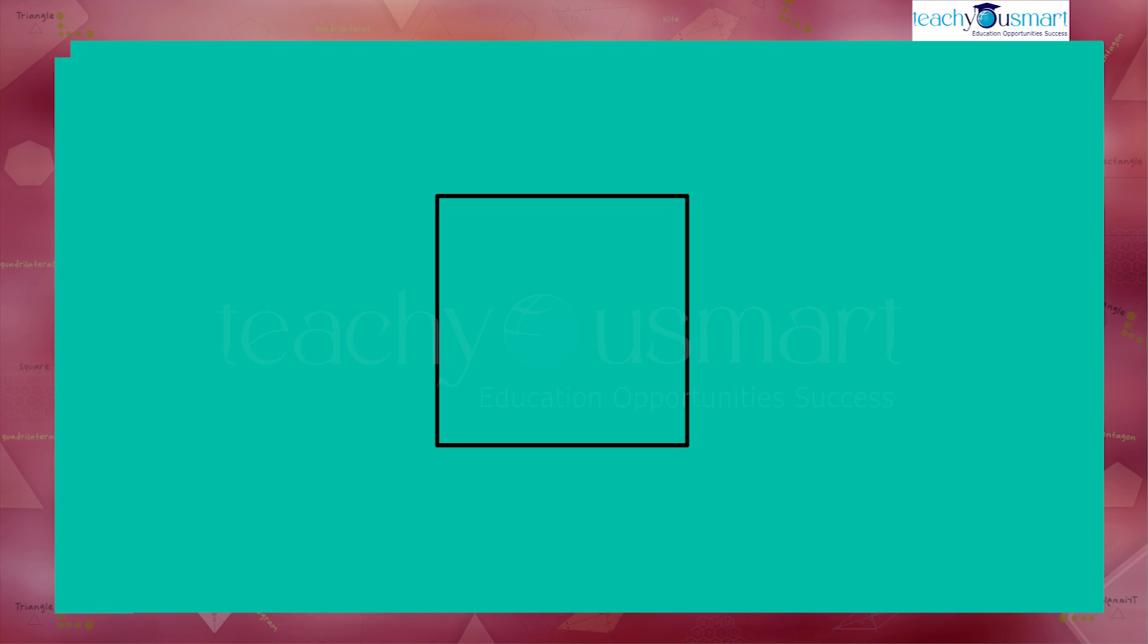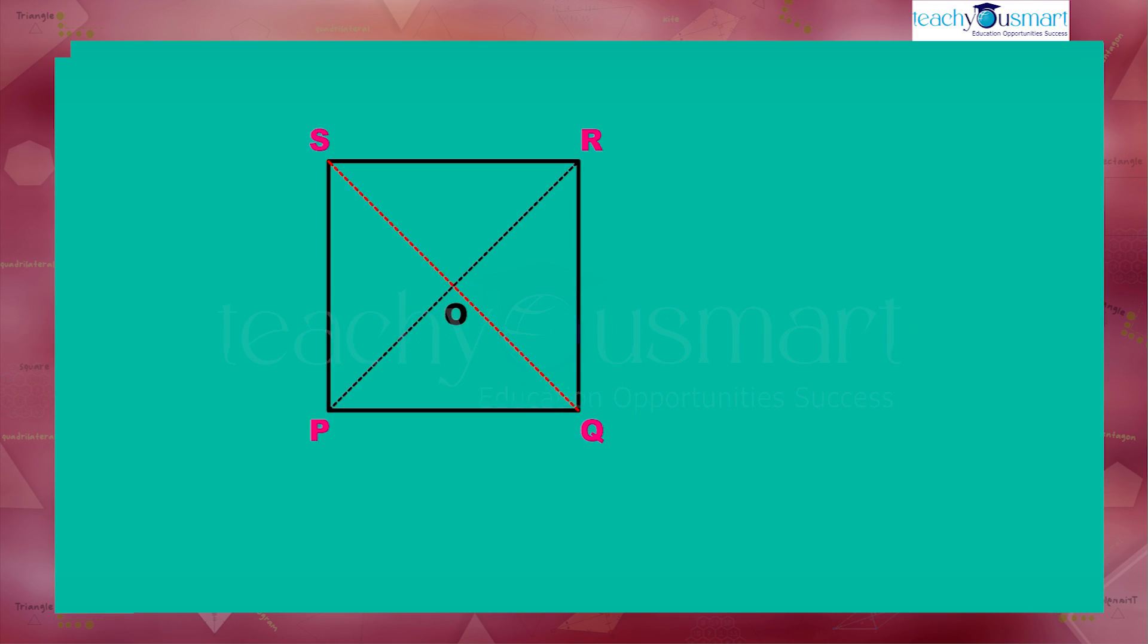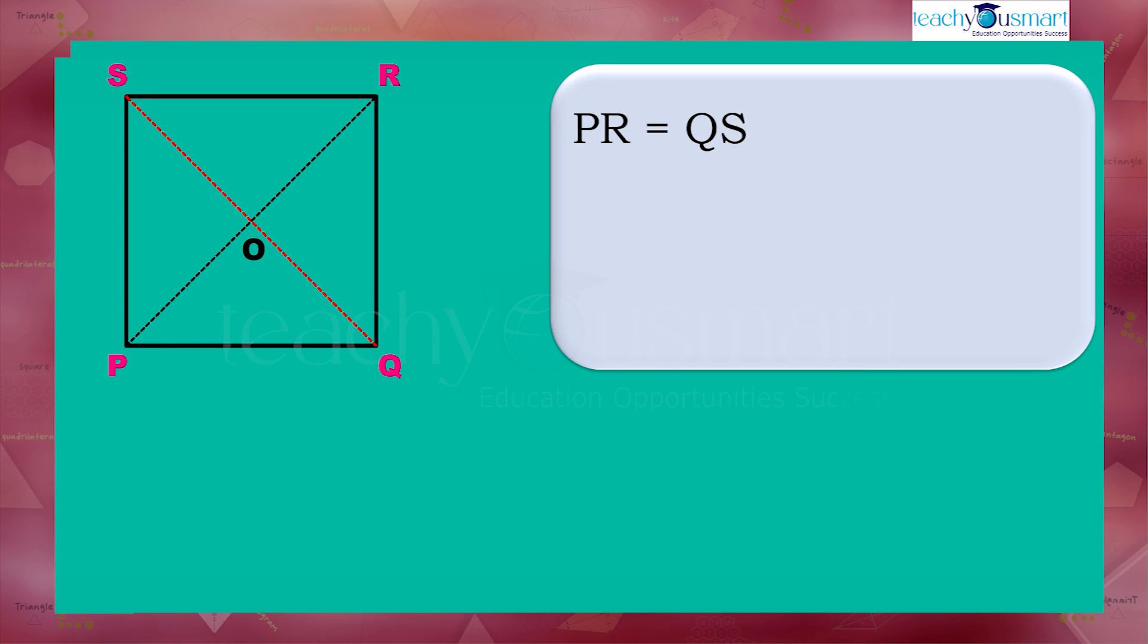In a square PQRS, PR and QS are the diagonals that meet at O. Since it is a rectangle, the diagonals are equal. Since it is a rhombus, the diagonals are perpendicular bisectors of one another.